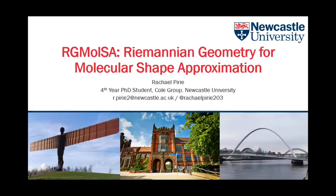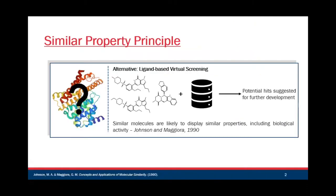Thank you very much, Costanza. Now we go on with Rachel. Good afternoon everybody, and thank you for the introduction. Today I'm going to be talking about the work we've been doing as part of my PhD, developing a new method for approximating the 3D shape of molecules by applying the mathematical theory of Riemannian geometry. It's often the case at the beginning of a drug discovery project that the structure of the protein we're trying to target is unavailable, which prevents the use of structure-based methods like docking or FEP in the identification of potential hits.